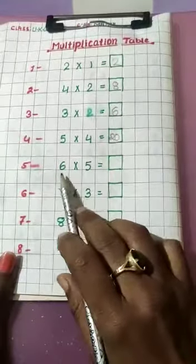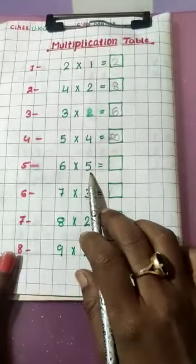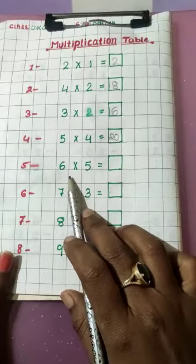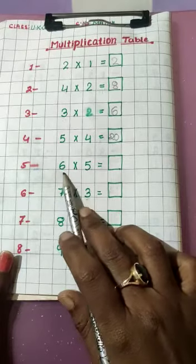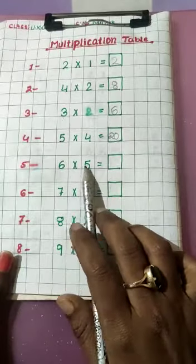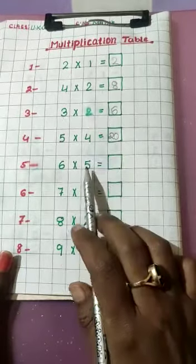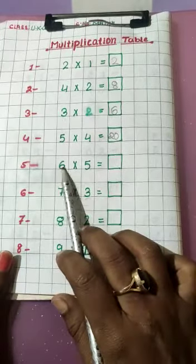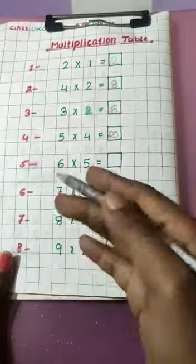Now, next one, 6 into 5. So, hum logon ne bas 5 tak ka table pardhay hai. To six ka table to nahi aata. To kaise pardhayenge? Main hai bata ya ta. Pahalye main hai bata chukka hai. 5 ka table 6 times pardhayenge. Thik hai? 5.